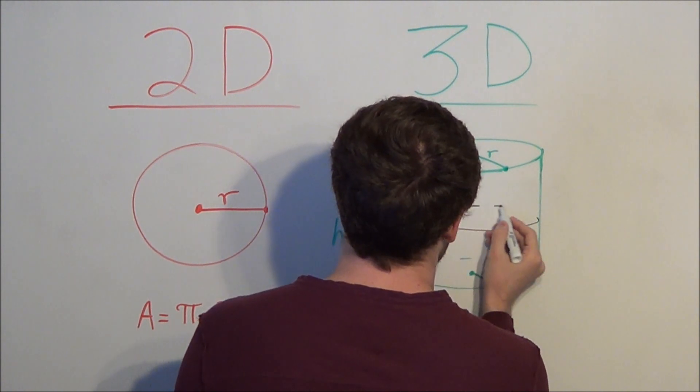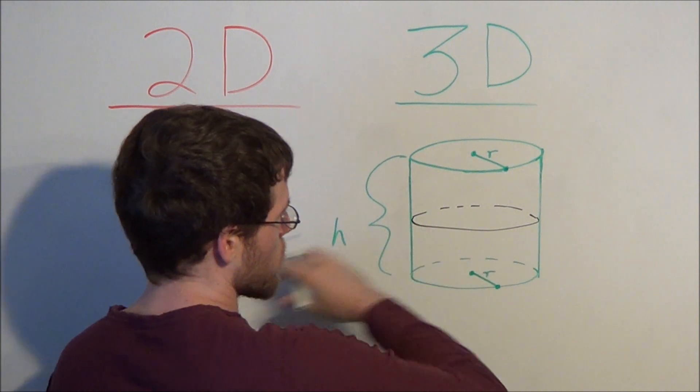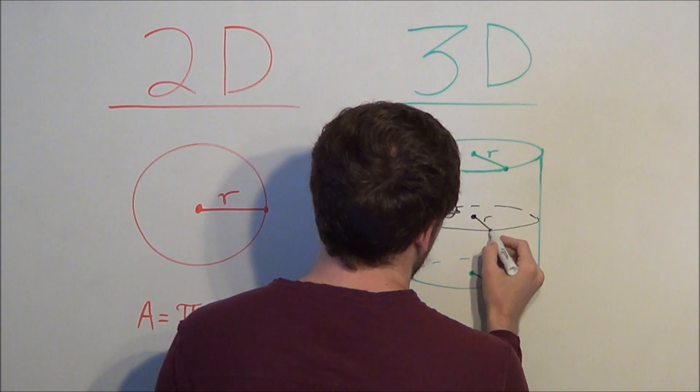What this tells us is that the circle at the top of a cylinder, the bottom of the cylinder, and anywhere throughout the cylinder is exactly the same. They have the same dimensions, the same radius.